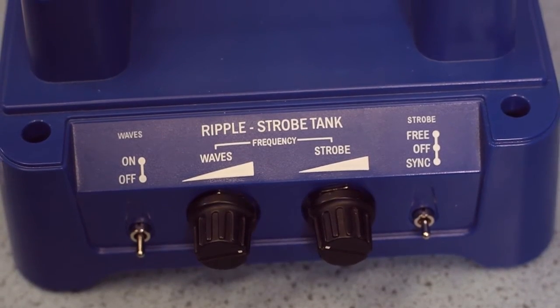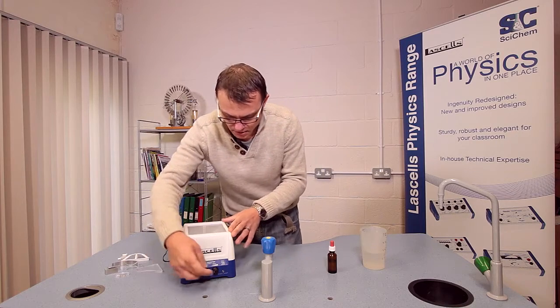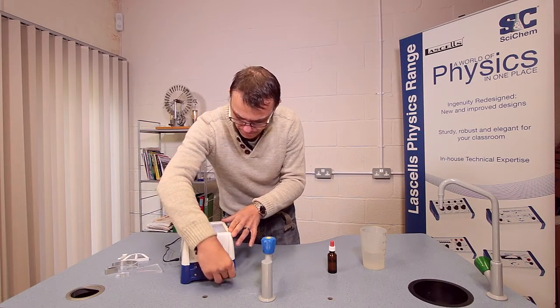Now, the controls on the front of the tank are very simple. I'm going to set the strobe lamp to sync. And what this does is it links the frequency of the strobe lamp with the frequency of the waves. And that gives you perfectly stationary images on the screen.